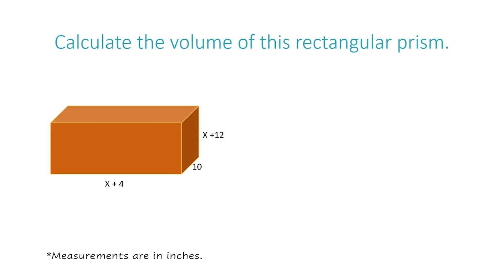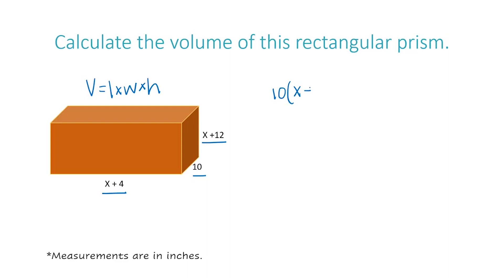Before we do a problem that involves factoring, let's calculate the volume of this rectangular prism. The formula for the volume of a rectangular prism is volume equals length times width times height. So x plus 12 is one of our dimensions, 10 is one of our dimensions, and x plus 4 is one of our dimensions. We need to multiply all of these together, so I'm going to write that as 10 times (x plus 12) times (x plus 4).